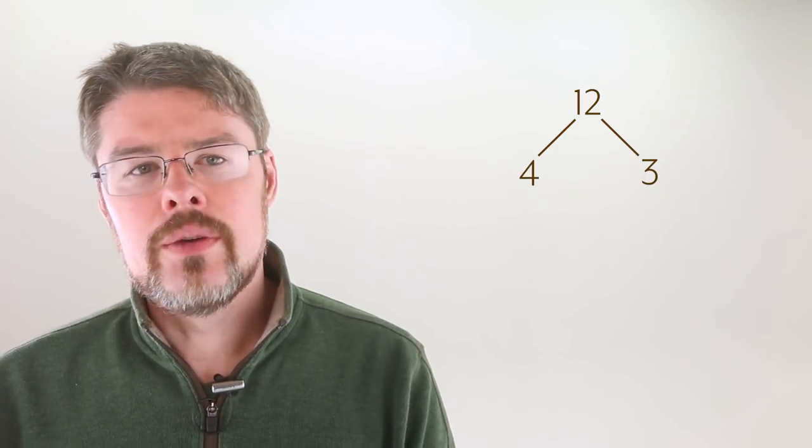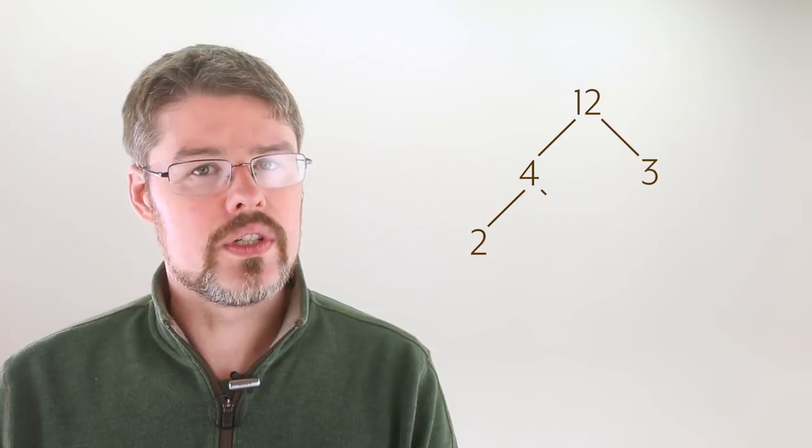Now you might have noticed that we can break down 4 in the same way, because 4 is the product of 2 and 2. The notation means the same thing here. 2 times 2 is 4. In fact, you can go all the way up. 2 times 2 times 3 is 12. Now we might like to go further, but we can't. Both 2's are prime, as is the 3.